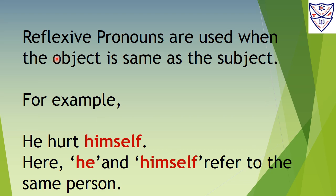Reflexive pronouns are used when the object is the same as the subject. For example, 'He hurt himself' — here 'he' and 'himself' refer to the same person. Think of looking in a mirror: you see your own reflection. In the same way, a reflexive pronoun means the object reflects the subject.